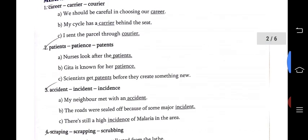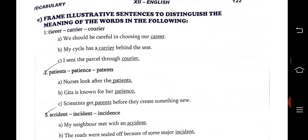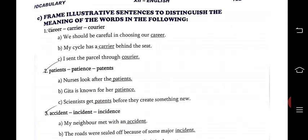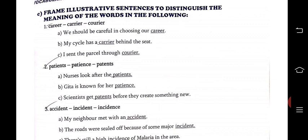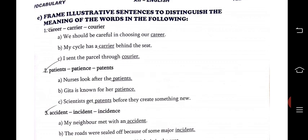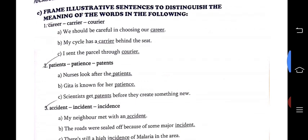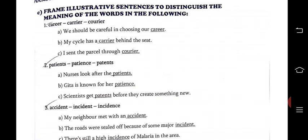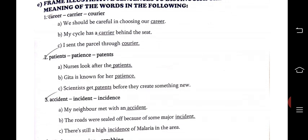Now, frame illustrative sentences to distinguish the meaning of the confusables. Be very careful while choosing them. Career, carrier, courier — we should be careful in choosing our career. My cycle has a carrier behind the seat. I sent the parcel through courier. Then patience, patient, patent — a nurse looks after the patients; Geeta is known for her patience. Patent means a license or a government authority — note it down. Scientists get a patent before they create something new.